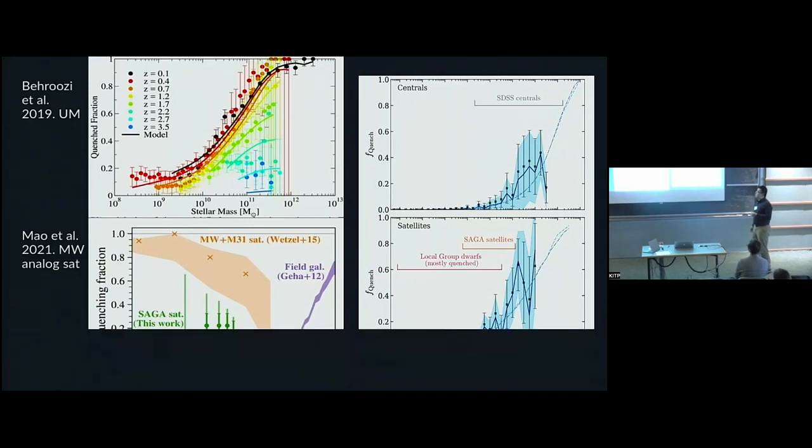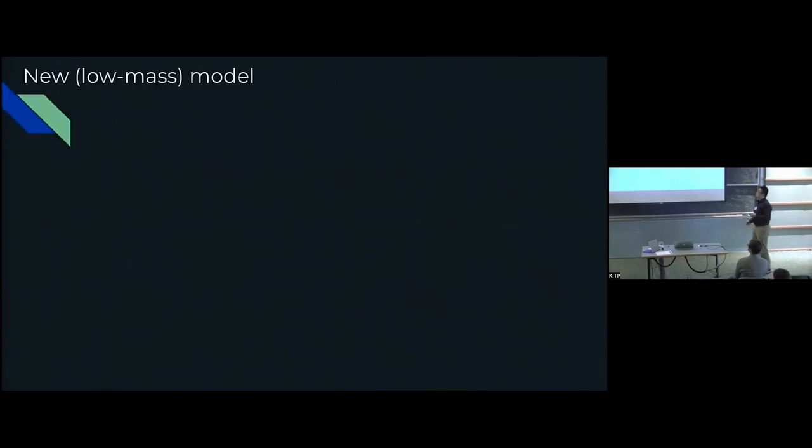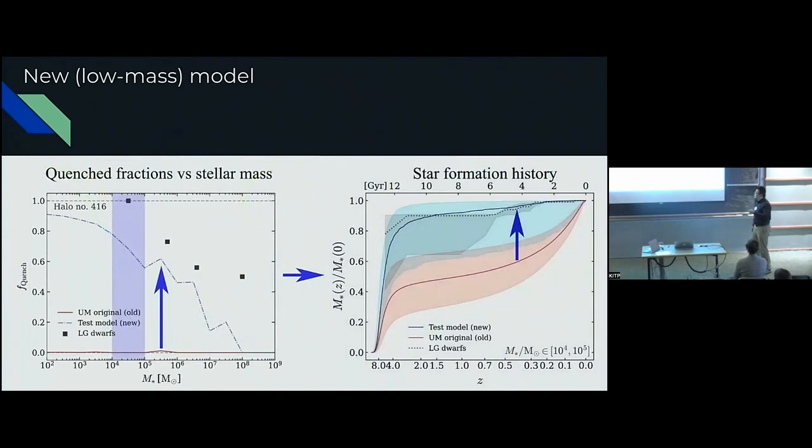This goes on to my ongoing work, adding new quenching model to UniverseMachine at these mass scales. We want to reconstruct the model with constraints that are now inconsistent with the current model. I started playing around with adding basically another set of error functions at lower masses. With a hand-picked set of parameters applied to one zoom-in halo, you can see that it quenches the dwarfs and produces a much higher quench fraction. The normalized star formation history is very close already in this mass bin compared to local group works.